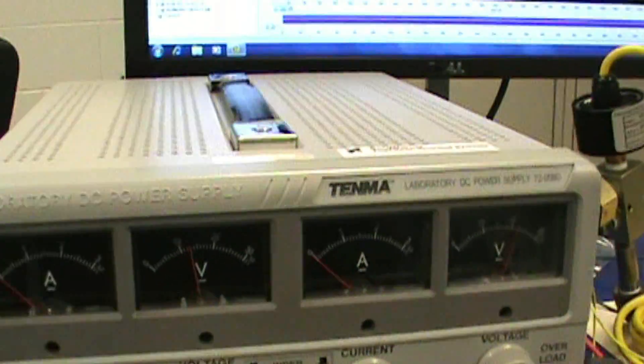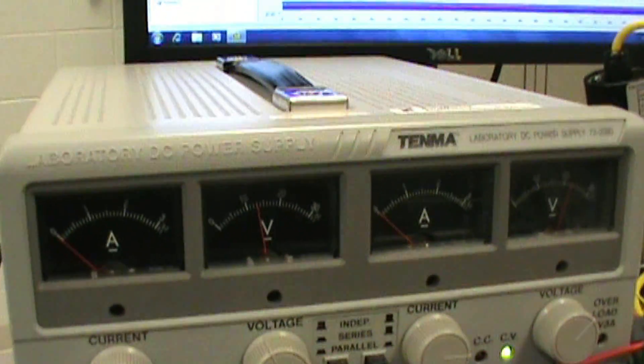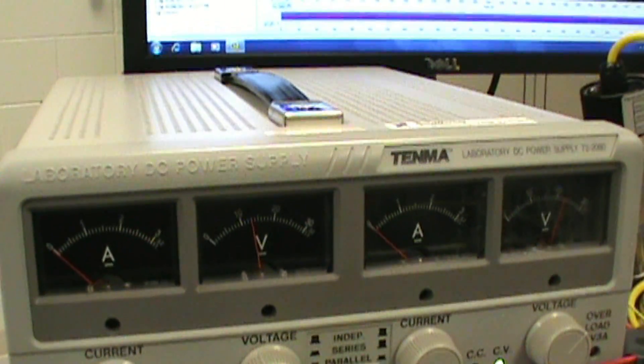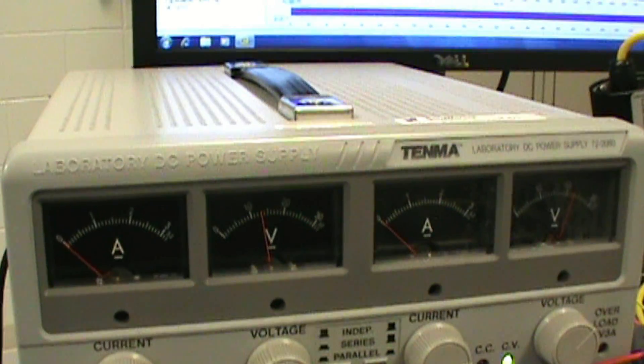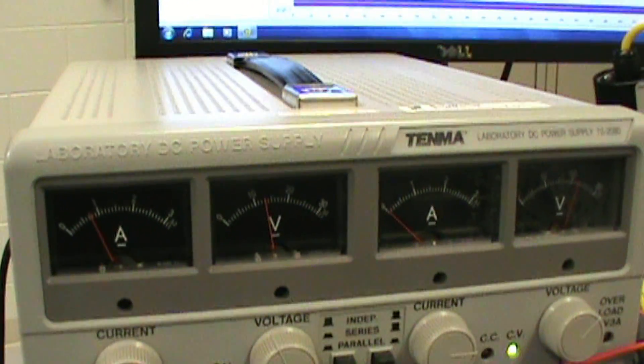Also when the pressure is achieved you'll see this amp meter down here to the left increase showing the current being pulled by the solenoid. There it goes.